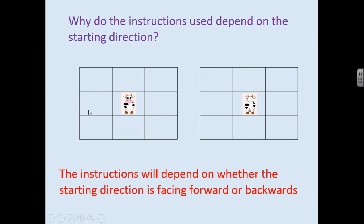Now if we look at this grid here on the left, the cow is facing us and we want it to move into this square here. So what we'll say is move one step backwards. Because it's facing us, it will be moving back.